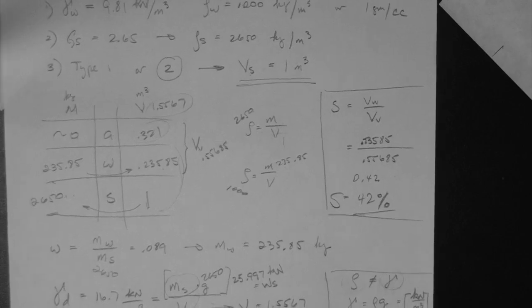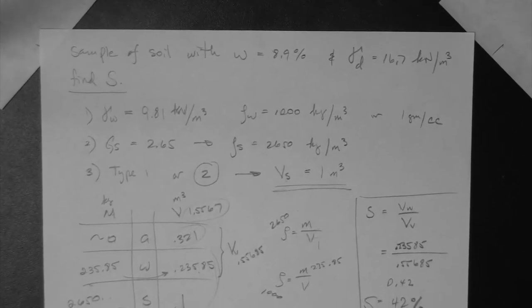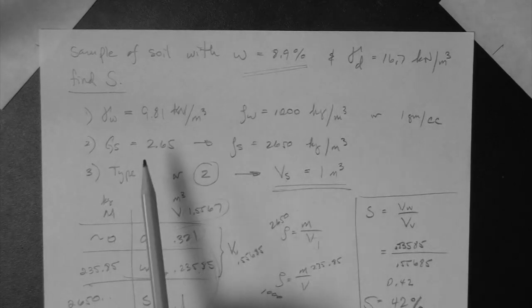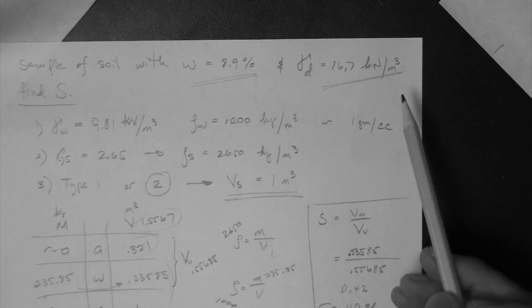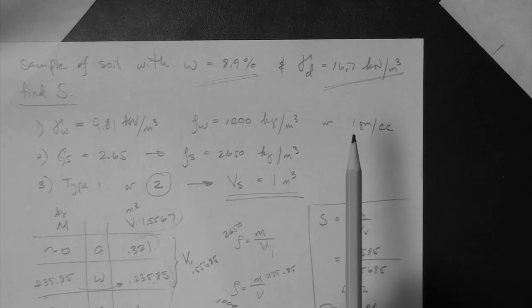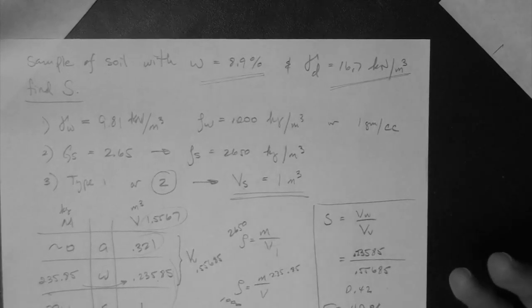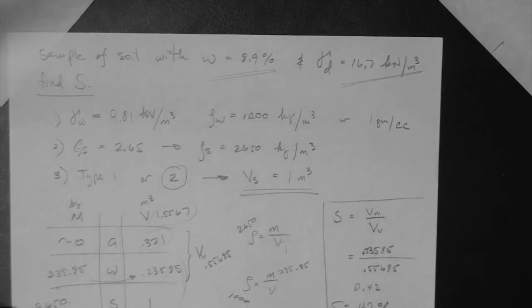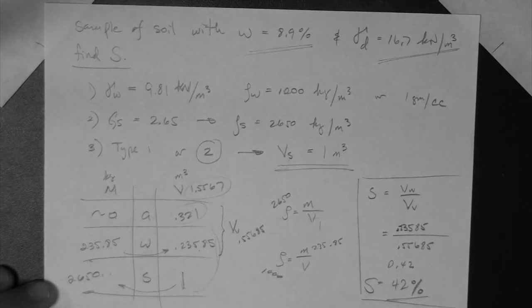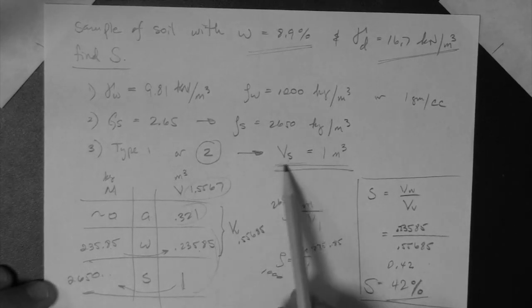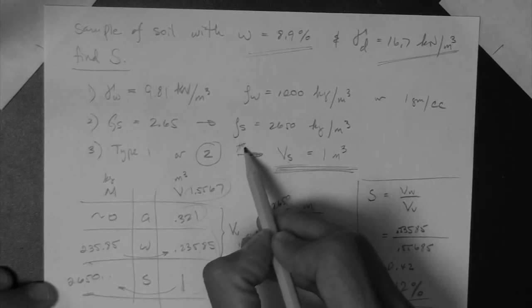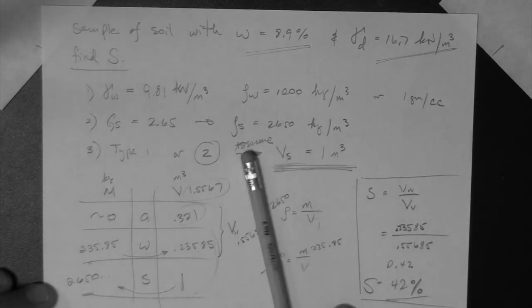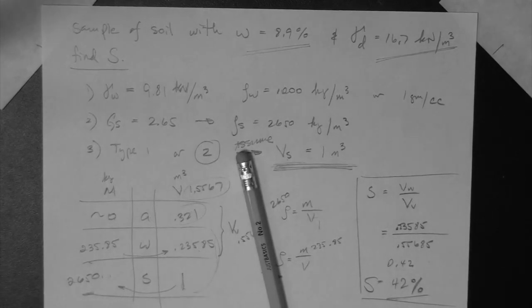Okay? So this is an example of a type 2. Because, remember, again, this is a phase relationship with no units, and this is a phase relationship, obviously, with units of a ratio. If you're just given this, and there's no quantities of mass, volume, or weight for the soil, then it's a type 2, and you can assume that. Okay? Okay.